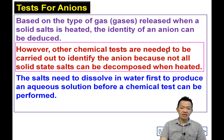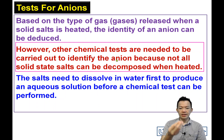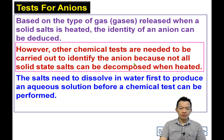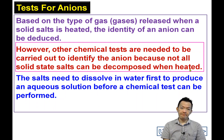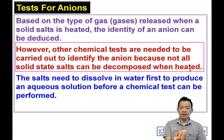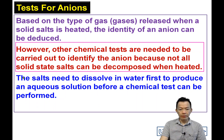However, other chemical tests are needed to be carried out to identify the anion. 为什么呢？我们还需要其他的tests来identify我们的anion，因为不是全部的盐，你烧它，它都能分解。因为你烧它，它不能分解，不能放出gas，你就找不到它的负离子了。So for this type of salt, they need to dissolve into water first, to produce an aqueous solution before a chemical test can be performed.